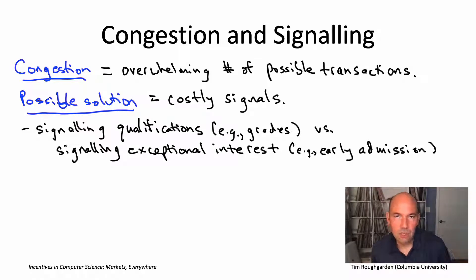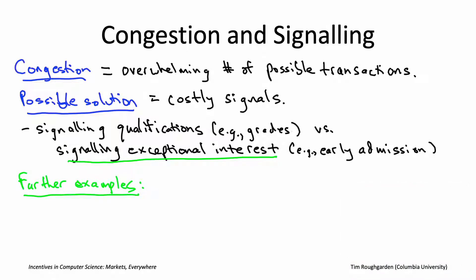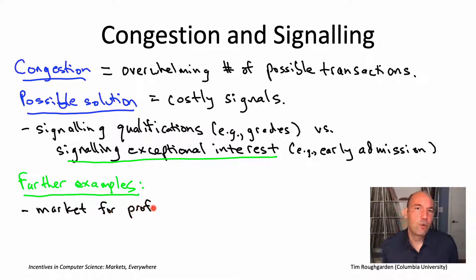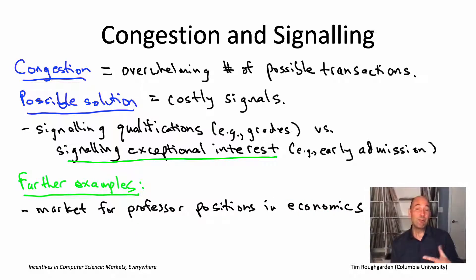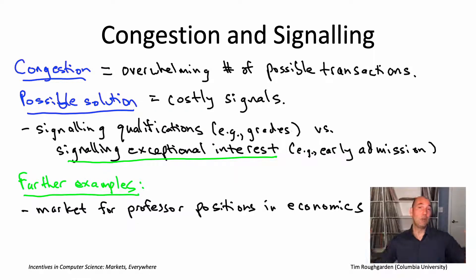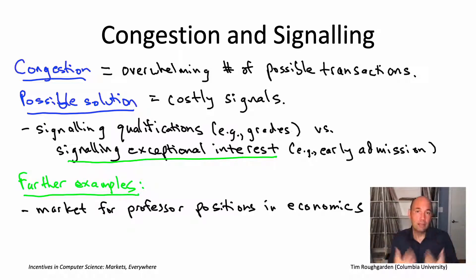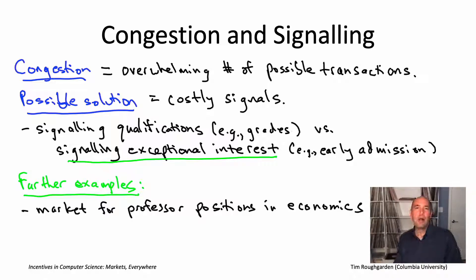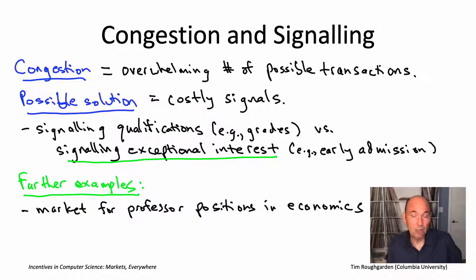Drilling down into this use of signals to signal interest, let's look at a couple more examples. One interesting example is in the market for economics professors. In pretty much any field — economics, computer science, whatever — you get hundreds of applications per open position. That makes it totally out of the question to invite everybody for a face-to-face interview. You have to make the hard choice of which subset you're going to invite to visit and interview, maybe eight out of hundreds, maybe twelve. If you're in the top-ranked department, it's fairly straightforward — you invite the strongest applicants, or at least the ones that appear strongest on paper.